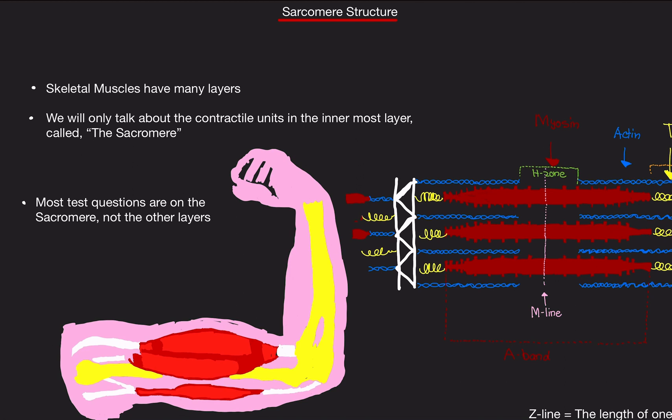So for example, whenever you flex your biceps or you flex your abs doing sit-ups, it's actually the sarcomere itself that's changing in length that causes the contractions. That's how you're able to lift weights or even hold yourself, stand up. It's contractions of the sarcomere.